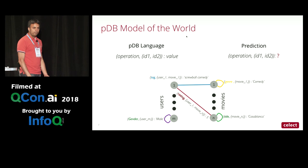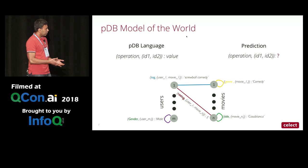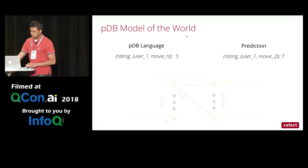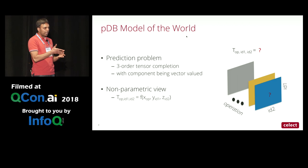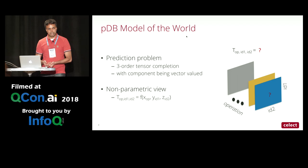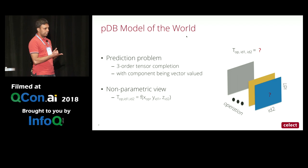Even though this key-value representation looks very simple, we've found it's able to model all kinds of relationships in data, including fairly complicated sets of relationships, using the same abstraction. In general, it looks like a third-order tensor completion problem: one dimension is operation, and you can view the data as slices along operation, where each slice has two axes — ID1 and ID2. Any time we want a piece of data that's not in the dataset, we specify operation, ID1, and ID2 as the key and query for the value.